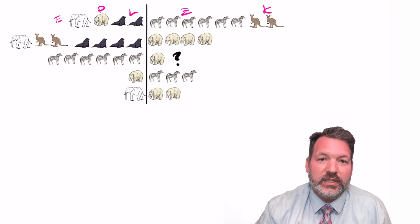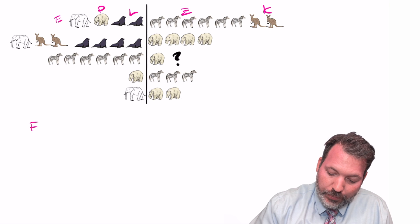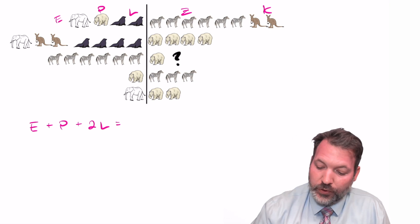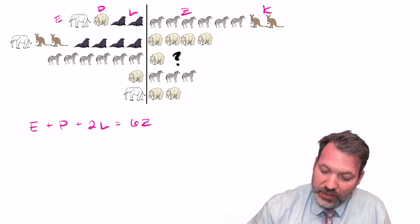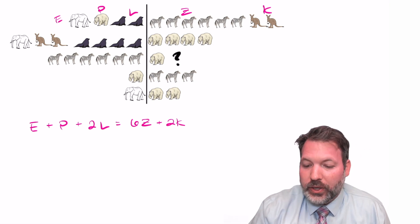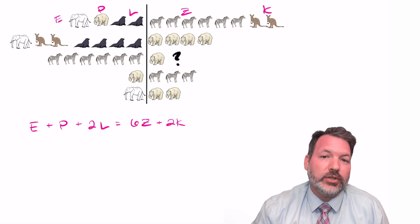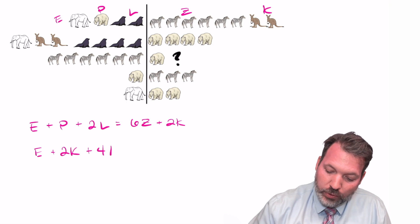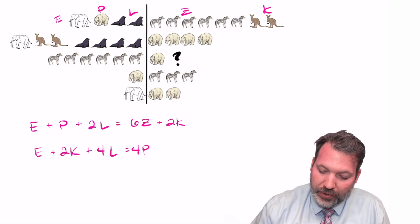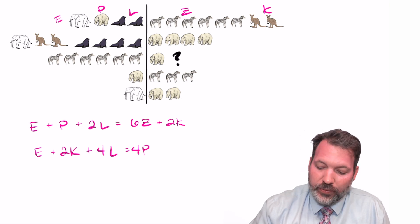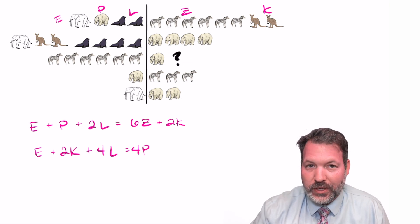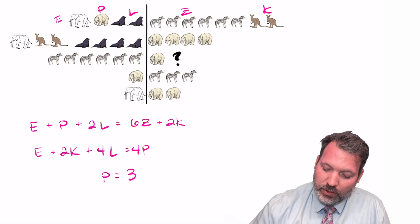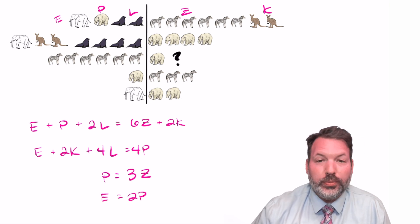Using these symbols, we can turn each one of these decks into an equation. We can say, for example, one elephant plus one polar bear plus two seals - I'm looking at the left side of the first deck right now - must be the equivalent of six zebras plus two kangaroos. And then we can just go down deck by deck, taking what we already know and turning it into an algebraic equation. For the second deck, one elephant plus two kangaroos plus four seals is going to be equal to four polar bears.